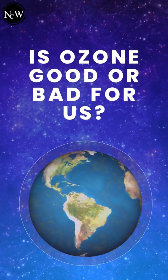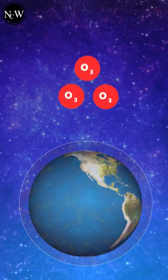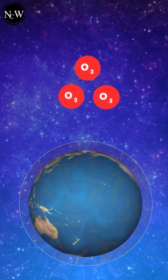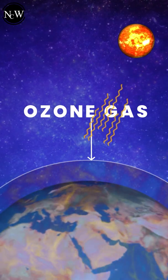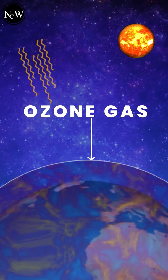Is ozone good or bad for us? We all have studied about ozone, a highly reactive gas composed of three oxygen atoms. Along with this, our earth is surrounded by a layer of ozone gas that protects us from harmful UV radiation that comes from the sun.